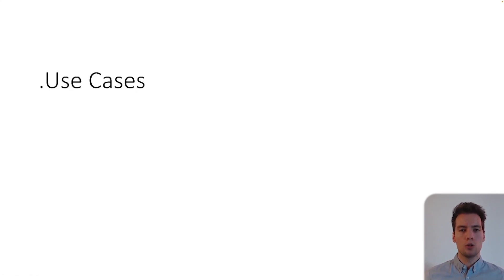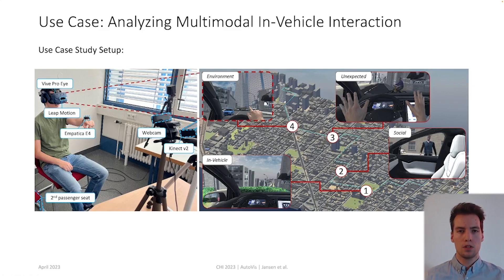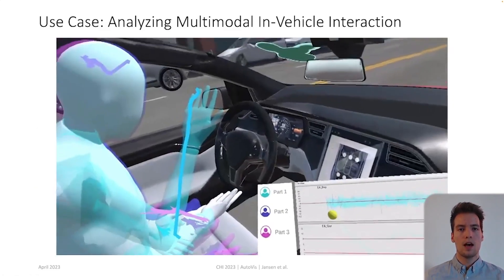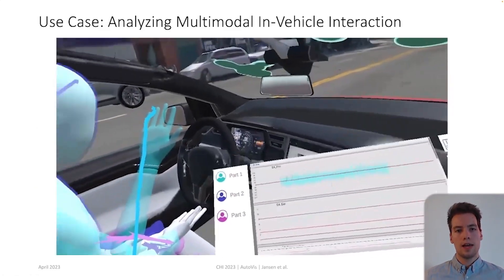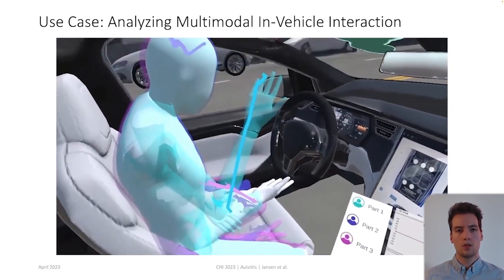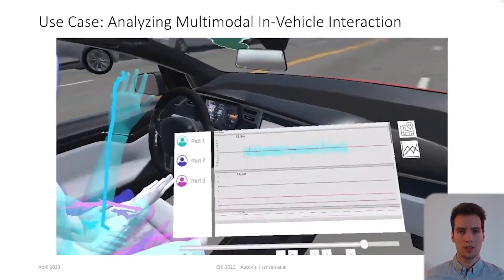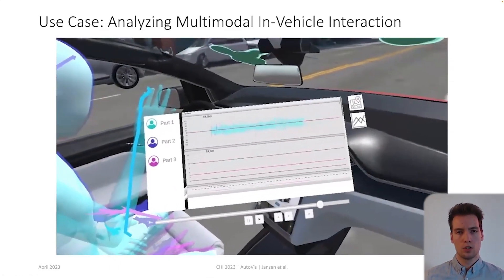We demonstrate AutoViz using authentic data from the use case of multimodal in-vehicle interaction. For this, we simulated a ride in an automated vehicle in downtown San Francisco to represent a typical study. Participants could freely interact with multiple modalities — touch, gesture, gaze and speech. After loading the data in AutoViz, analysts can start the analysis according to their research goals. In our use case, the goal is to investigate the usability of multimodal interactions depending on the context, time difference, order and their usage.